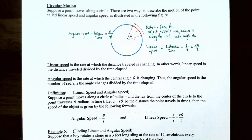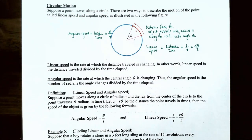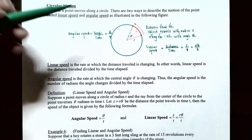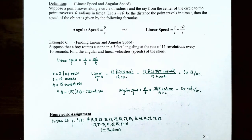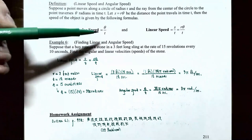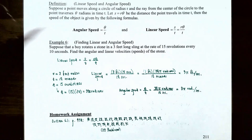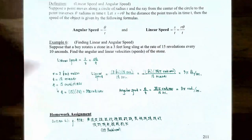The angular speed is the rate at which the central angle theta is changing — the number of radians the angle changes divided by the time elapsed: omega equals theta over t. So if a point moves along a circle of radius r and traverses theta radians in time t, with arc length s equals r times theta, then angular speed omega equals theta over t and linear speed v equals s over t equals r times theta over t.